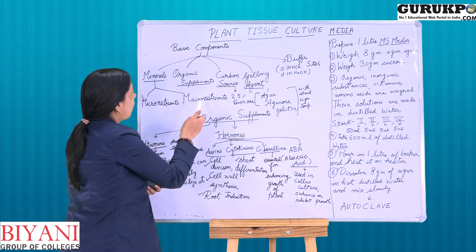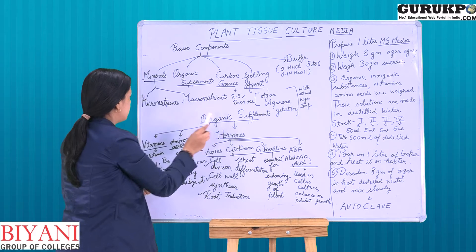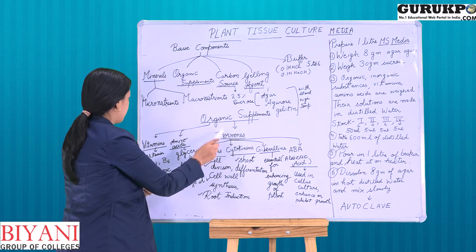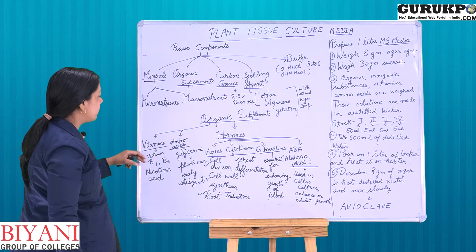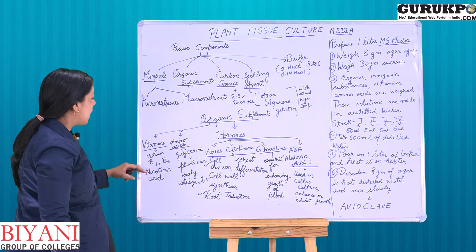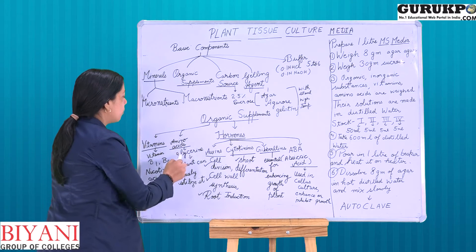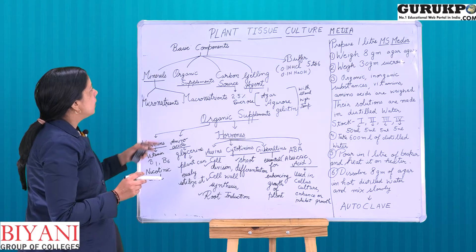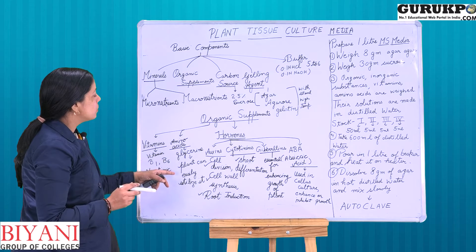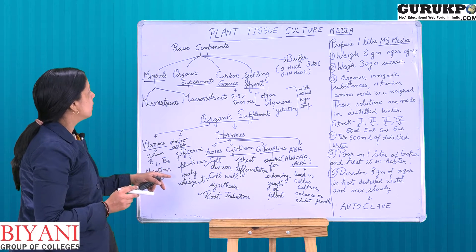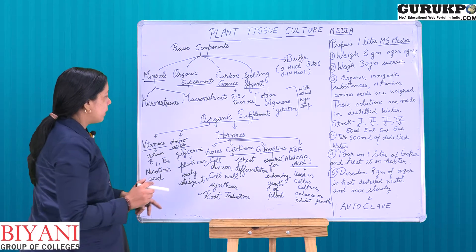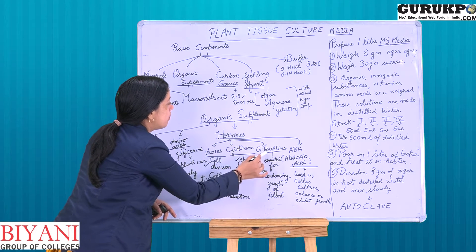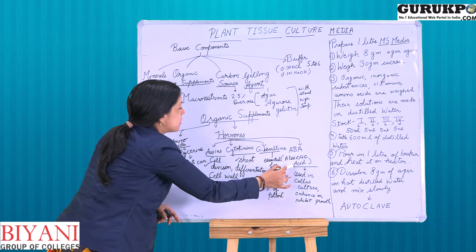Organic supplements include three types of components: vitamins, amino acids, and hormones. Vitamins include vitamin B1, B6, and nicotinic acid. The amino acids include glycine, which is easily utilized by plants. The hormones include auxins, cytokinins, gibberellins, and ABA — abscisic acid.